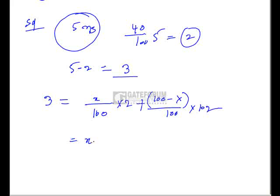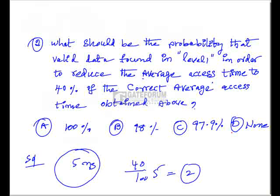So the x value is 99. So 99 percent. So this is option D. Option D is the correct option here.